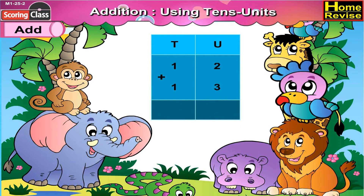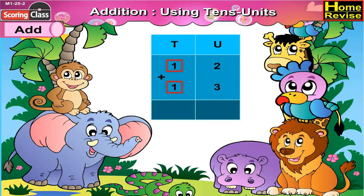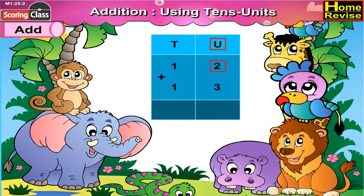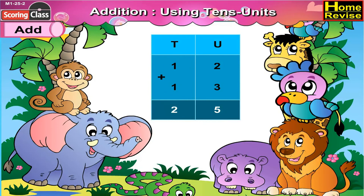The next sum. Under units we have 2 and 3, under 10s we have 1 plus 1. Under units column, 2 plus 3 is 5, 1 plus 1 is 2. So 12 plus 13 is 25.